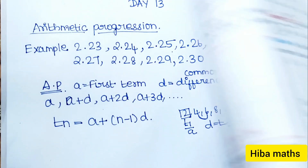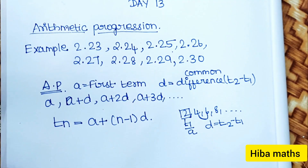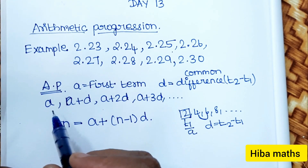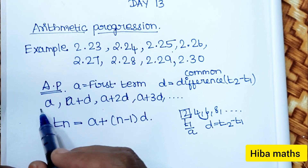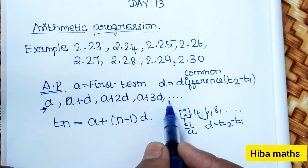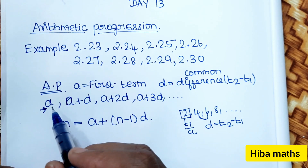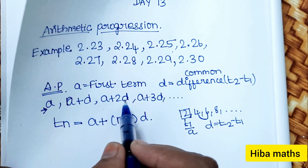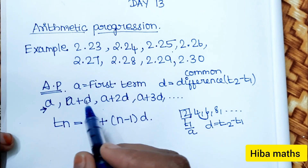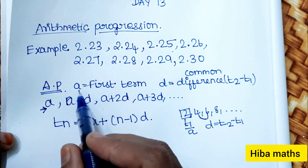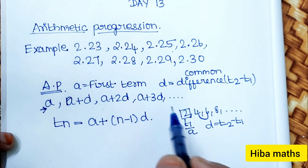The next type of question involves 'a' and 'd'. We can write the AP using this formula: a, a plus d, a plus 2d, a plus 3d. If we know 'a' and 'd', we can write out the full series.